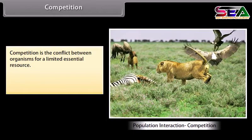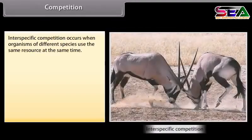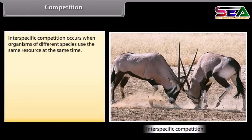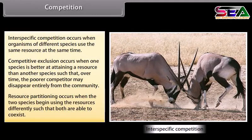Competition is the conflict between organisms for a limited essential resource. Intraspecific competition occurs when organisms of the same species use the same resource at the same time. Interspecific competition occurs when organisms of different species use the same resource at the same time. Competitive exclusion occurs when one species is better at attaining a resource such that, over time, the poorer competitor may disappear entirely from the community. Resource partitioning occurs when two species begin using resources differently such that both are able to co-exist.